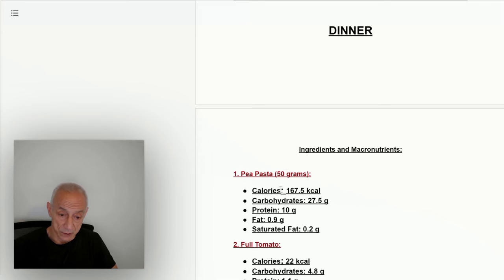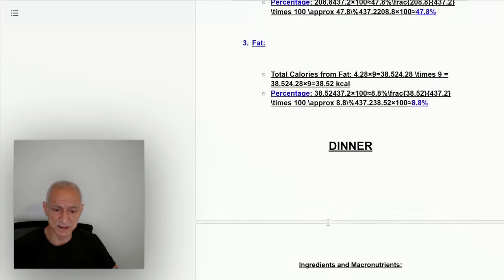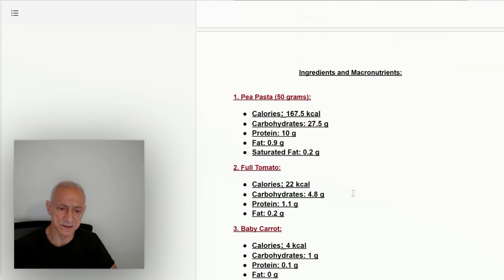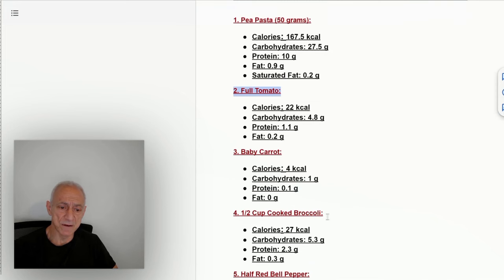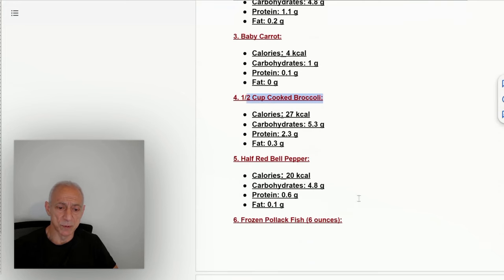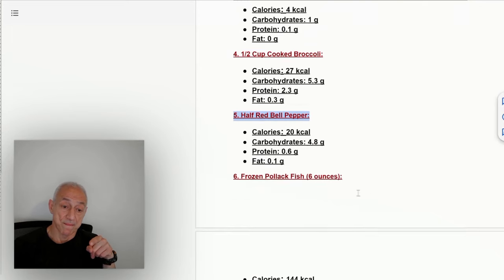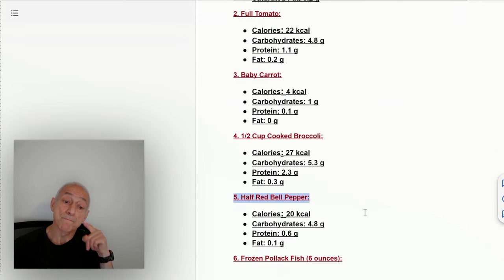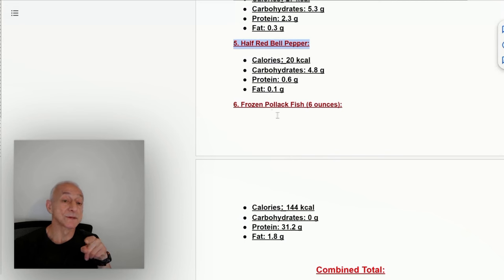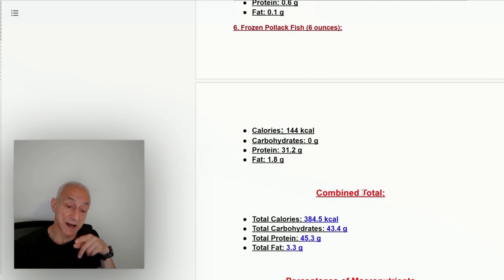I put a full tomato in there, a baby carrot, half a cup of broccoli, half a red bell pepper. And I put, this is one of my favorites, frozen pollock fish—six ounces, which comes out to 154 calories, about 31 grams of protein. The fat is basically... here it goes right here, I'm going to show it to you. This is frozen pollock you get from the supermarket.